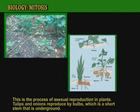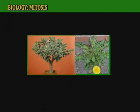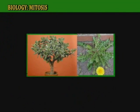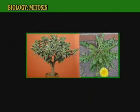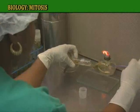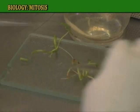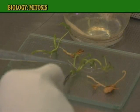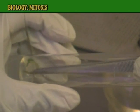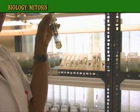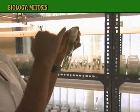Tulips and onions reproduce by bulbs, which is a short stem that is underground. New bulbs sprout from the old one, and each new bulb gives rise to a new leafy plant. Potatoes reproduce by tubers, which is an enlarged part of the short stem that is underground. The eyes become tiny buds, and each bud becomes a shoot which penetrates the soil and grows up. The bud also forms roots.